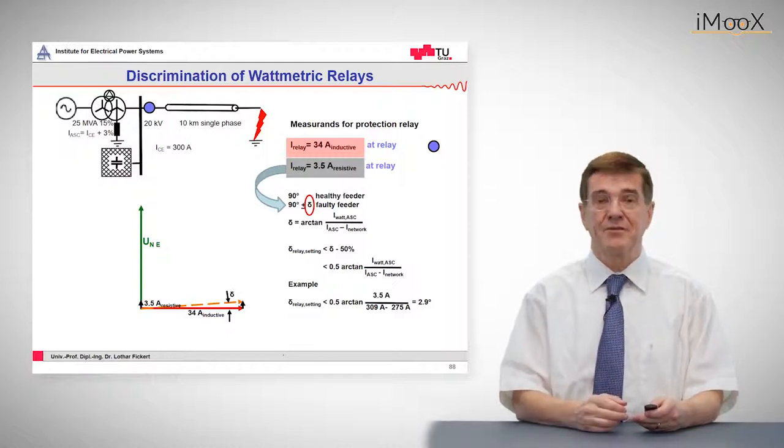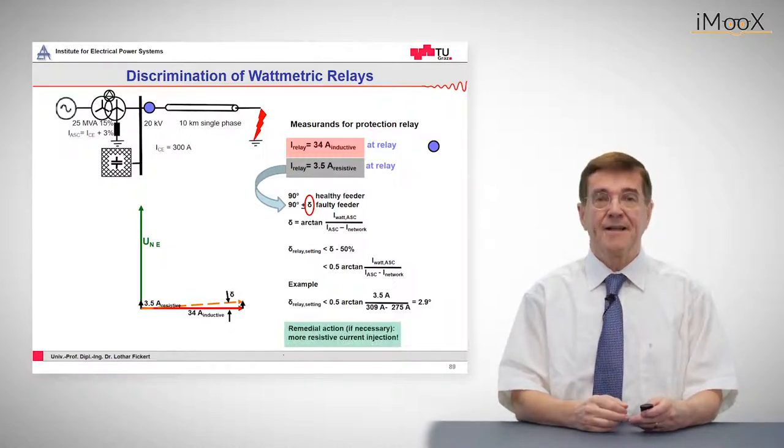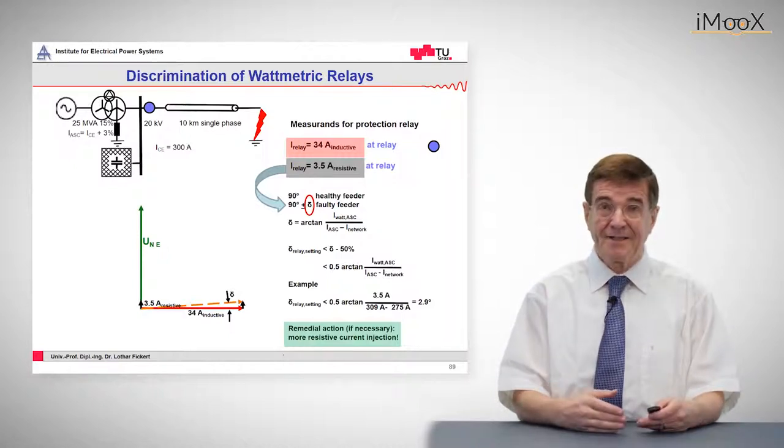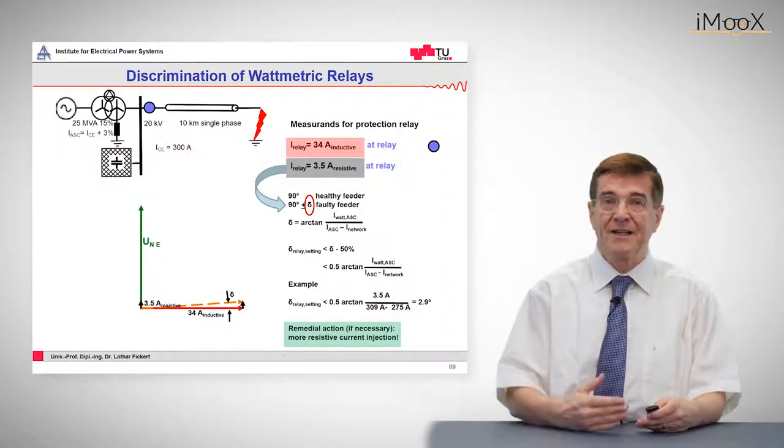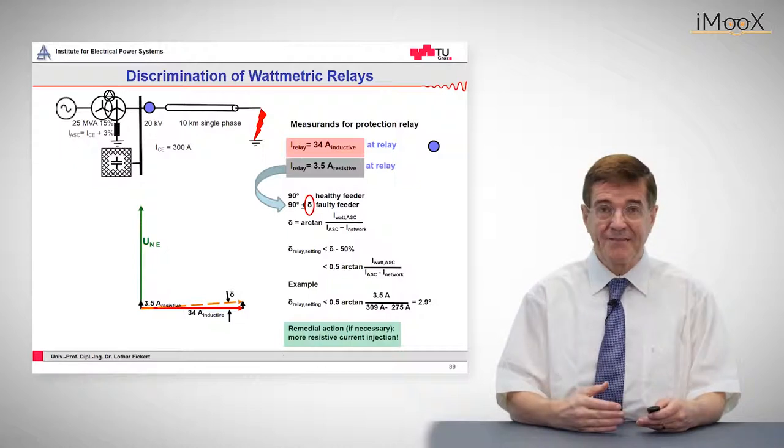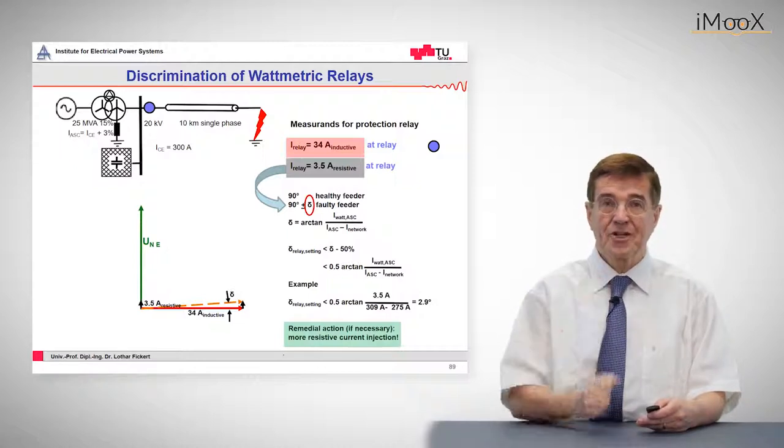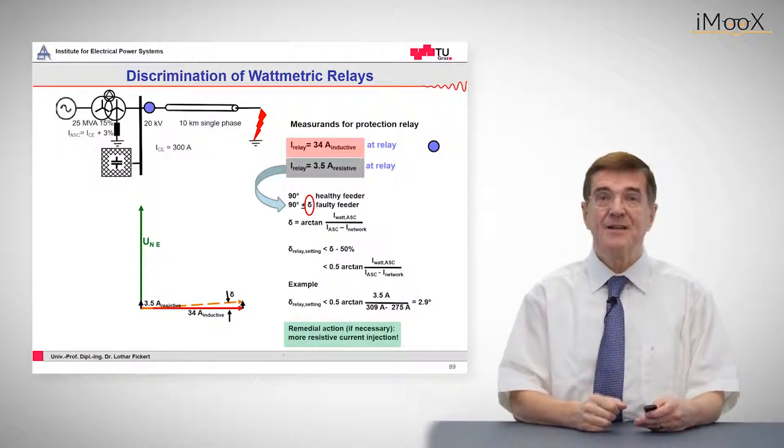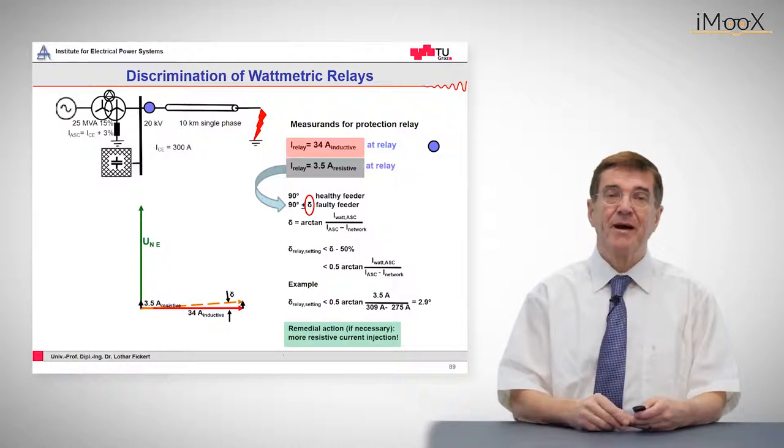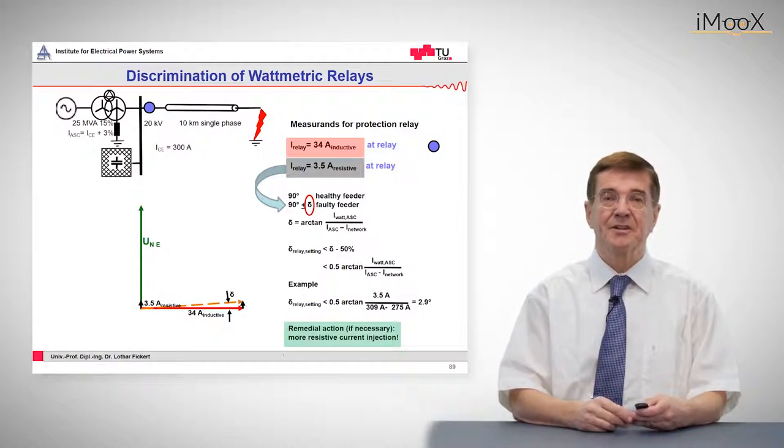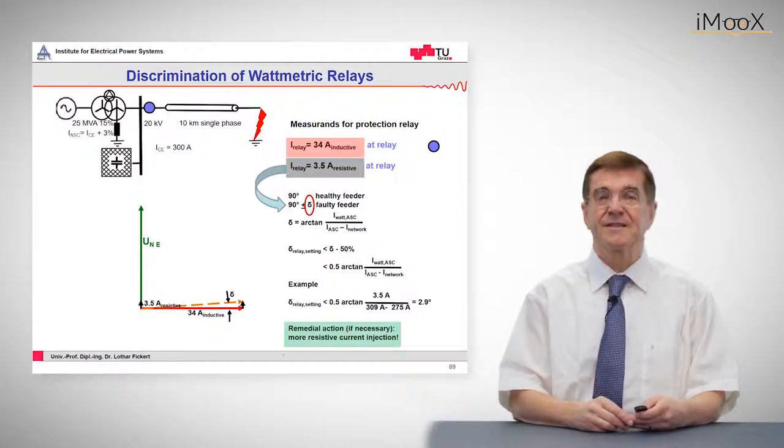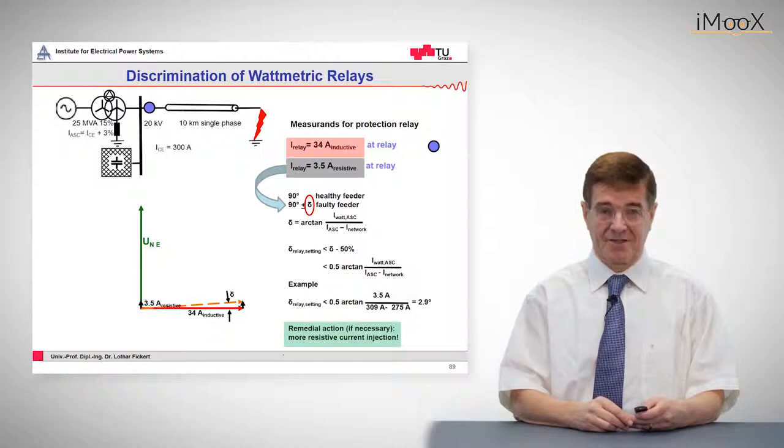This is very demanding for the relays to measure, and if in reality this angle is too low, or the relays will not pick up correctly, then there is just one chance for the wattmetric relays. We should increase this resistive current by adding further resistances in parallel to the loss-related resistance of the arc suppression coil.